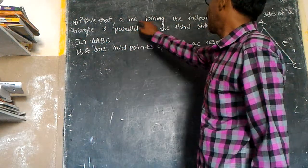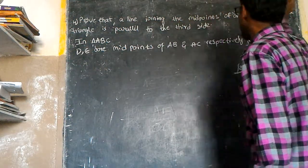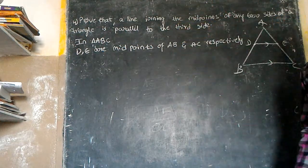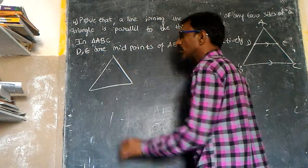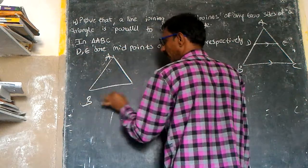Prove that a line joins the midpoints of any two sides of a triangle. One triangle. This is my ABC triangle.